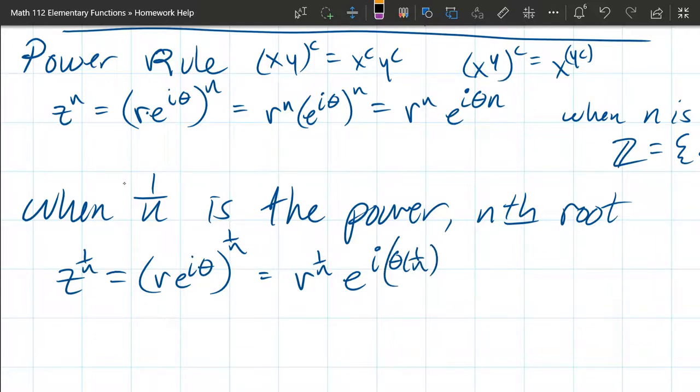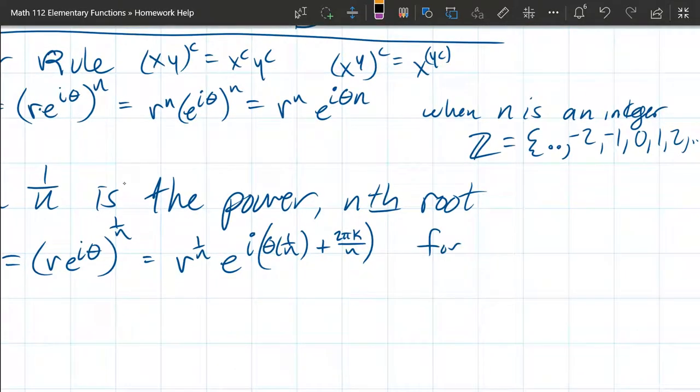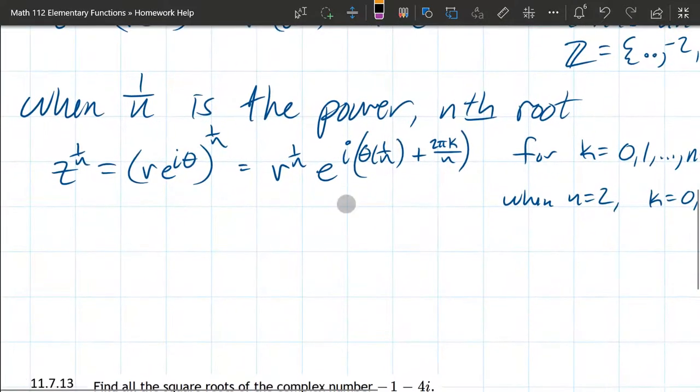There's going to be extra roots that come out here. And what they are, remember you can add as many rotations as you want, but you just have to cut them down by n. And this is going to be for k equals 0, 1, all the way up to n minus 1. So typically n is going to be 2. So when n is 2, your k is going to equal 0 and 1. It's going to go up to 1 less than n.